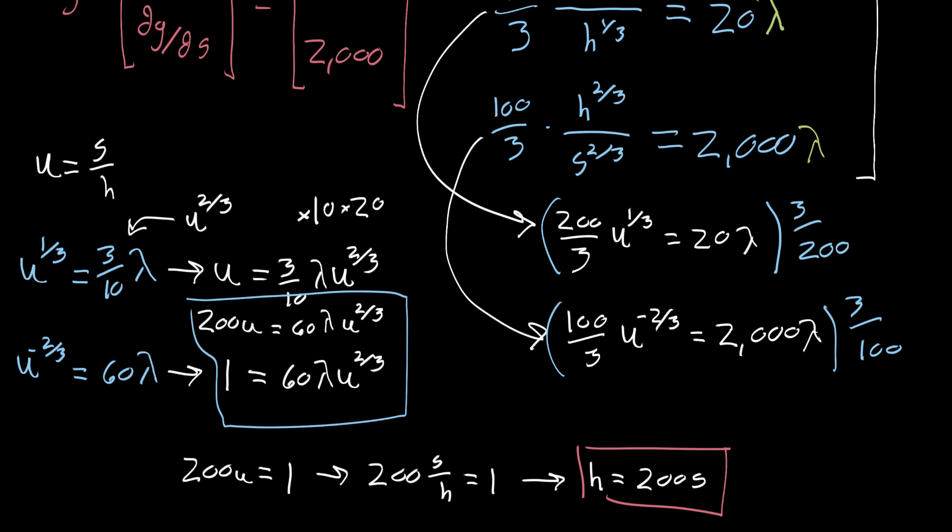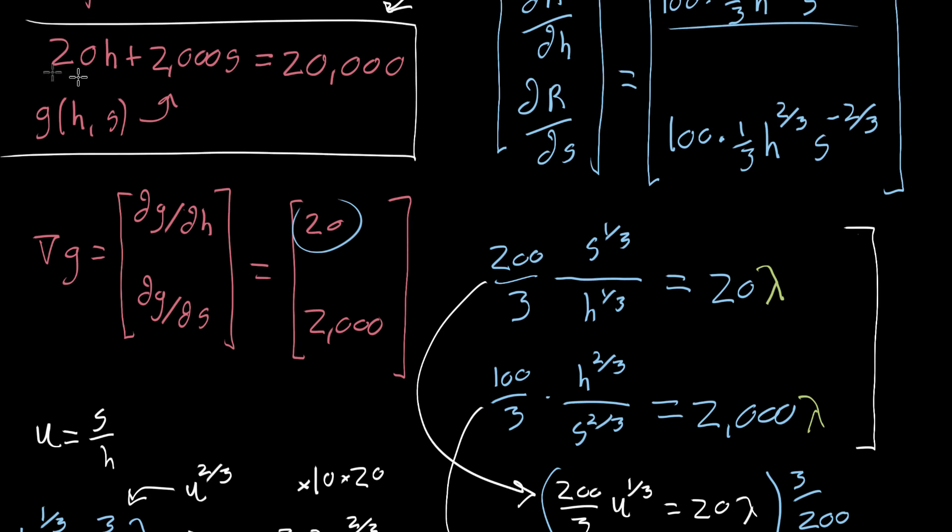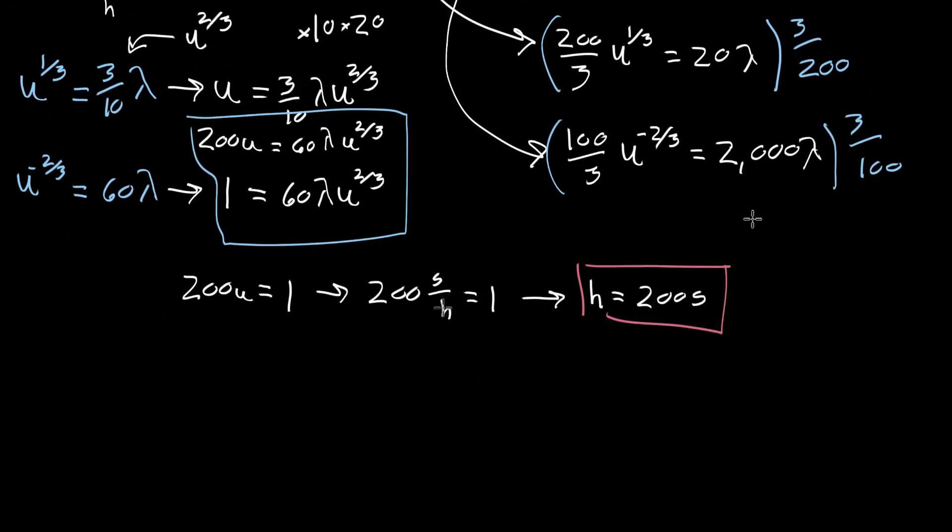And now what we apply that to is the constraint, is the 200 times H plus 2,000 times S equals our budget. I'll go ahead and kind of write that down again. That our 20 times H, 20 times the hours of labor plus $2,000 per ton of steel is equal to our budget of $20,000.